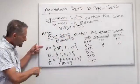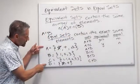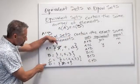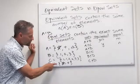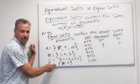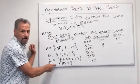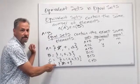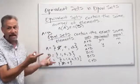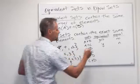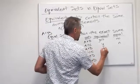What about A and D? Well, A has three elements and D has two elements, so they're not equivalent. And if they're not equivalent, they can't even be equal. So that's a no on both.